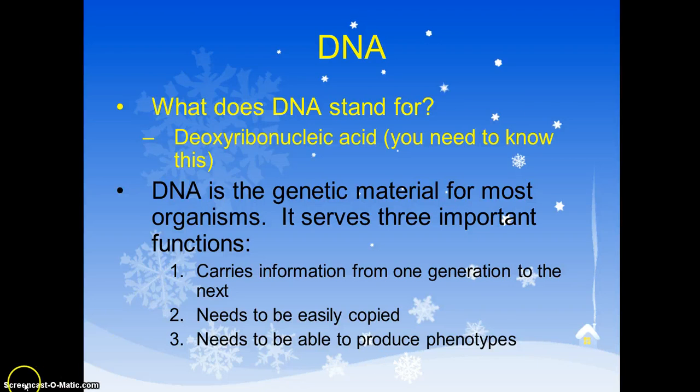The second thing is it needs to be easily copied and that explains itself. DNA replication of the cell cycle. Every time I make a cell, you have to make more DNA. And the third thing is it has to be able to produce phenotypes. If you all remember, phenotypes are the physical characteristics and DNA has to do those three things and it does.